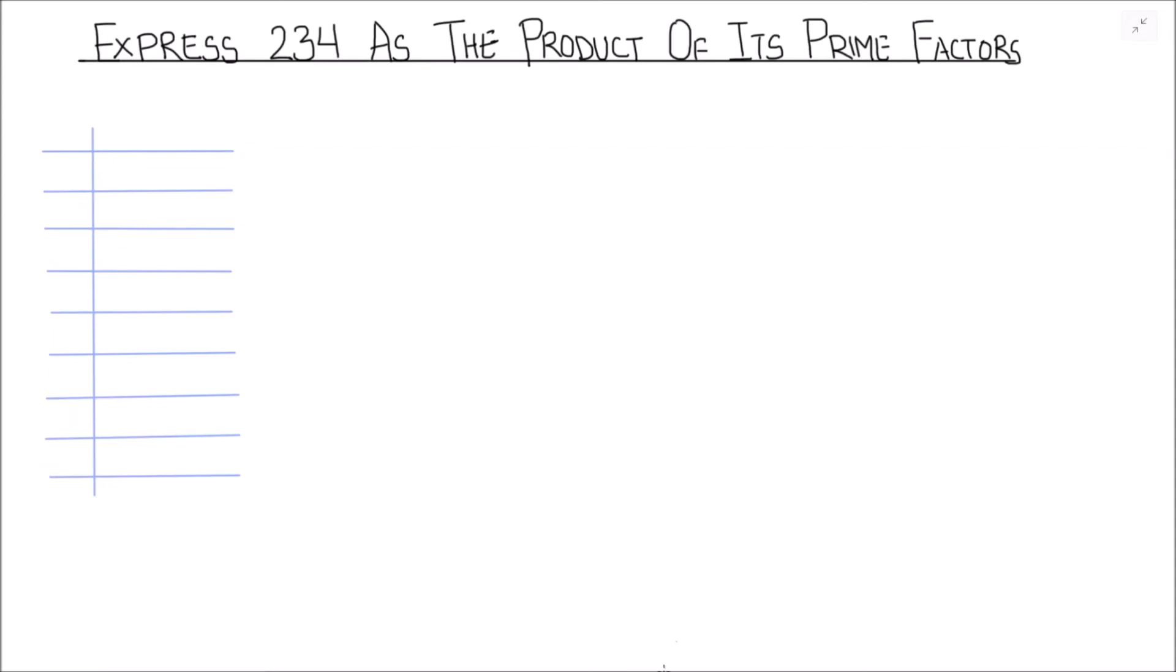Hello everyone, today in this video we are going to learn how to express 234 as the product of its prime factors. Before finding the factors of 234, let us revise the definition of prime factors. So, factors are numbers which when multiplied give a product.